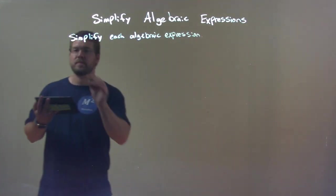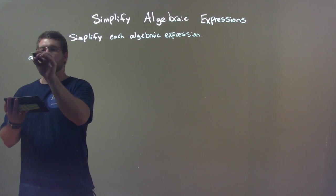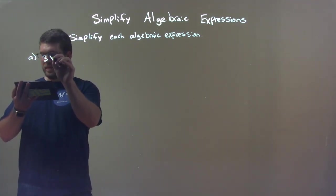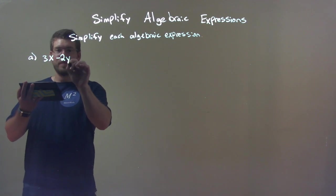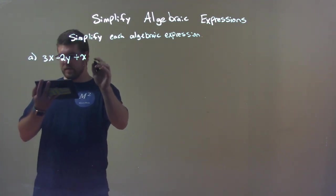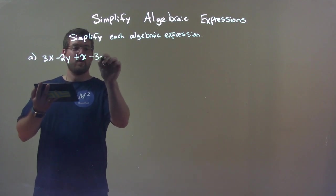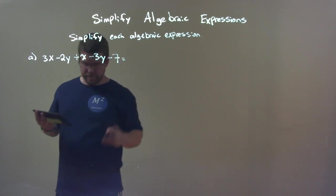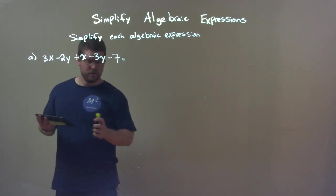Okay, so for a, we have 3x minus 2y plus x minus 3y minus 7. Okay, the marker is not doing so hot.